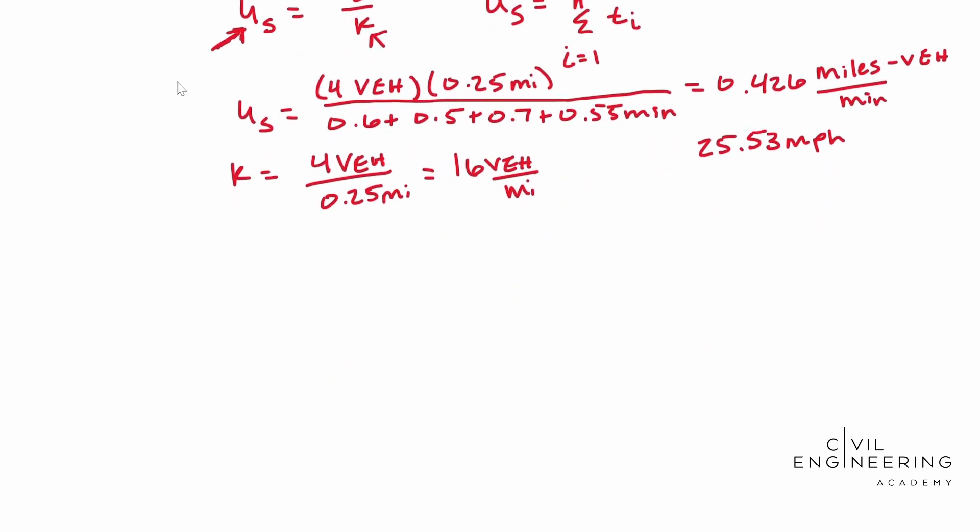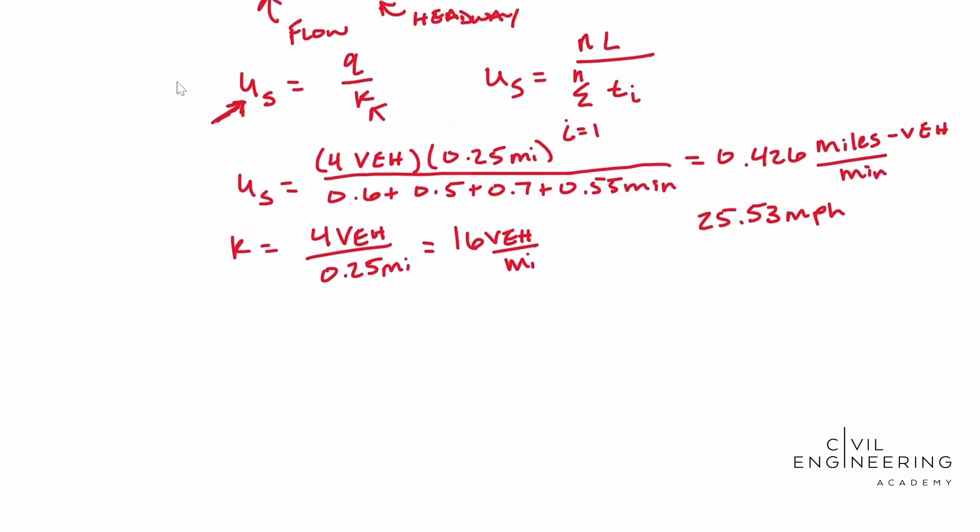Whenever we use our, I'm going to scroll up. There we go. Whenever we plug this stuff into our formula and we solve for Q, Q is equal to space mean speed times that K.